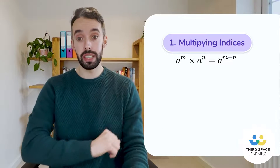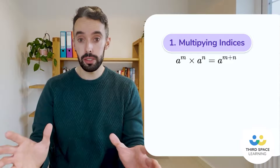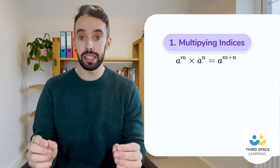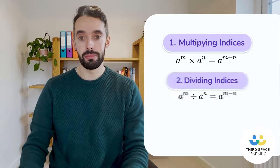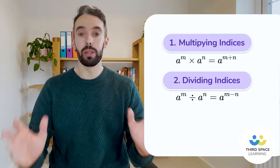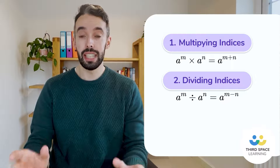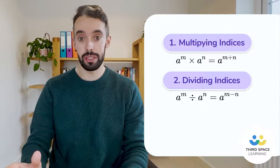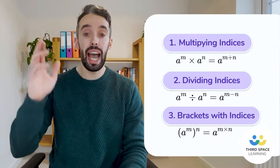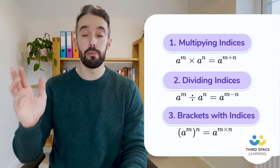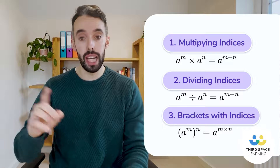The first law of indices is when we are multiplying together terms with the same base — all we do is add the powers. The second law is when we are dividing terms with the same base — we subtract those powers. And the third one is when we have a power outside of a bracket, and all we do is multiply those powers together.